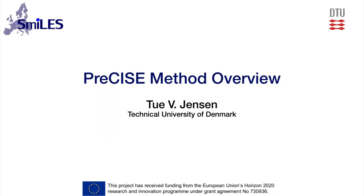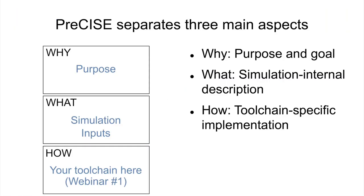The PRECISE method in a nutshell separates three main things about your simulation. It separates the why — the purpose and goal of your simulation. It separates the what — your simulation inputs and internal description. And it separates the how — all the tool chain specific implementation. At the end, you have a tool chain that you put all these inputs into, fold your purpose into, run, and do data analysis.